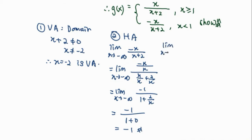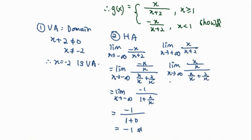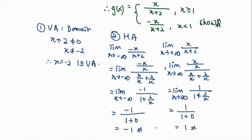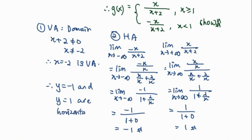We proceed to find the limit when x approaches positive infinity, and the function we select is x over (x plus 2), because when x approaches positive infinity, x will be greater than or equal to 1. We simplify this function since we get an indeterminate form, dividing by the highest power of x, which is x to the power of 1. We substitute infinity and get 1 over (1 plus 0), which equals 1. So y equals negative 1 and y equals 1 are the horizontal asymptotes.